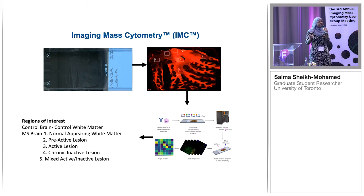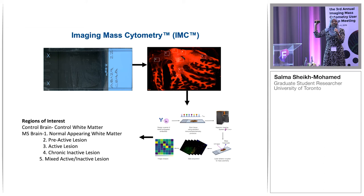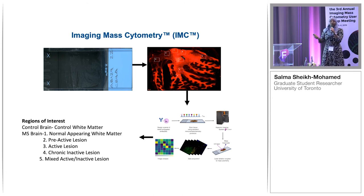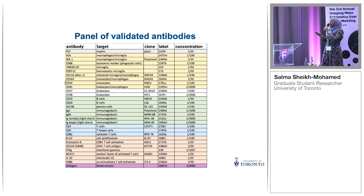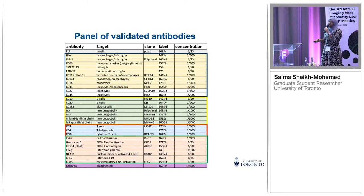We had serial sections of this tissue. We stained one slide by IF for PLP, which stains myelin in red, and picked ROIs representative of the different lesion types we were interested in — each square corresponds to one of those lesion types. We then stained the serial slide by IMC and looked at each ROI. The panel included PLP for myelin, myeloid cell markers, plasma and B cell markers, T cell markers, activation and inflammation markers, and collagen for blood vessels.